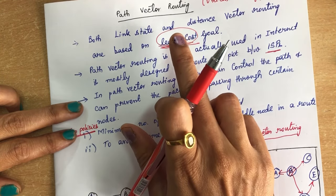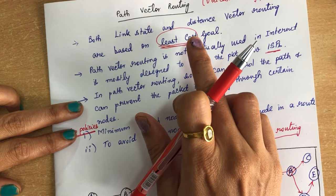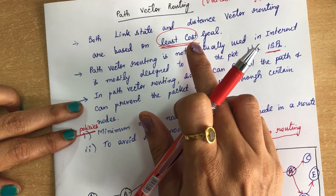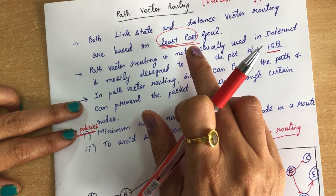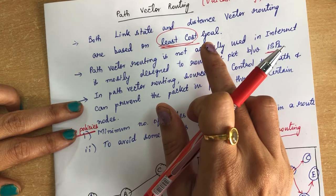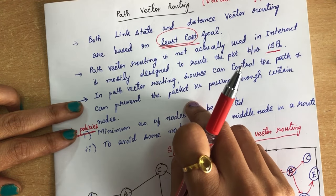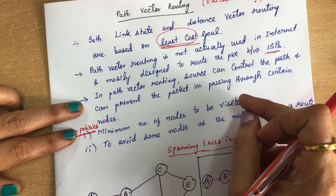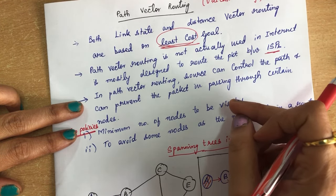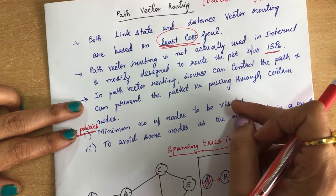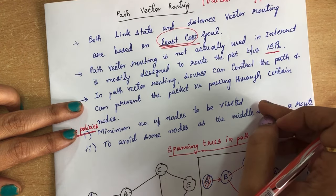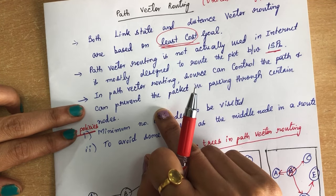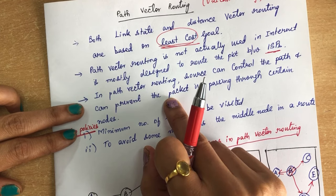In the other methods, once they find the shortest path using the least cost method, they must pass the packets through that particular path. But in path vector routing, the source can decide whether the packet can flow through certain nodes or not. This occurs because of security reasons — if you do not want packets to flow through a particular route, you can avoid that route.